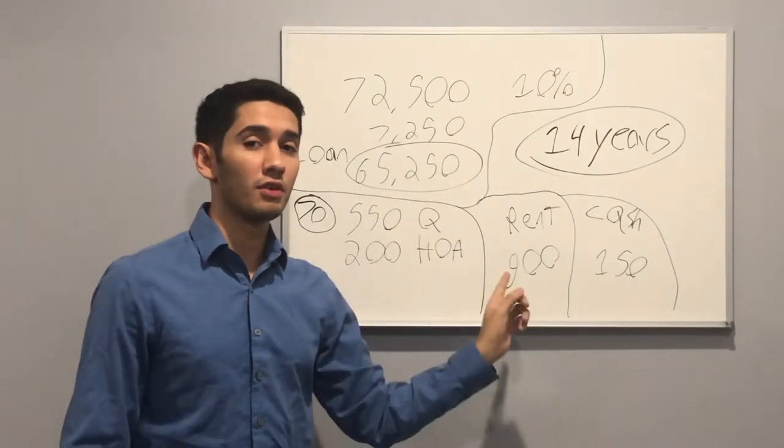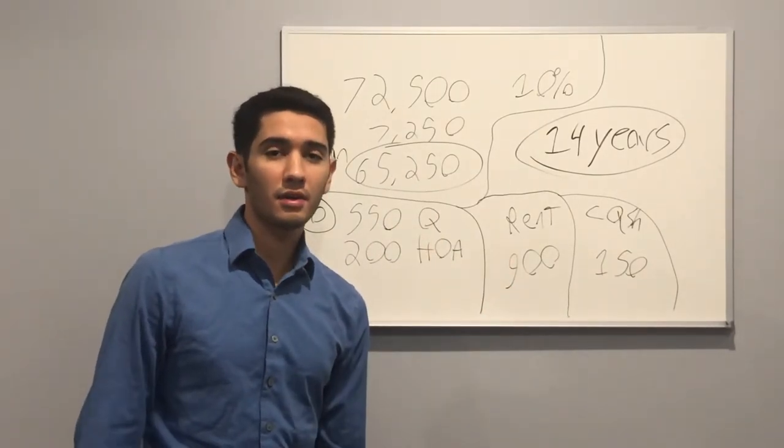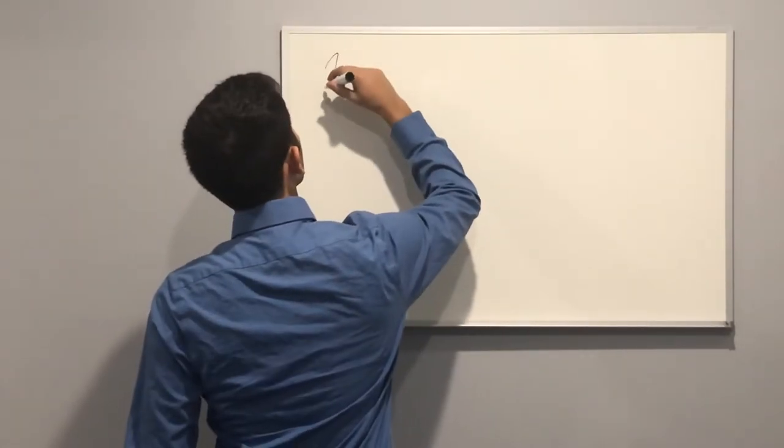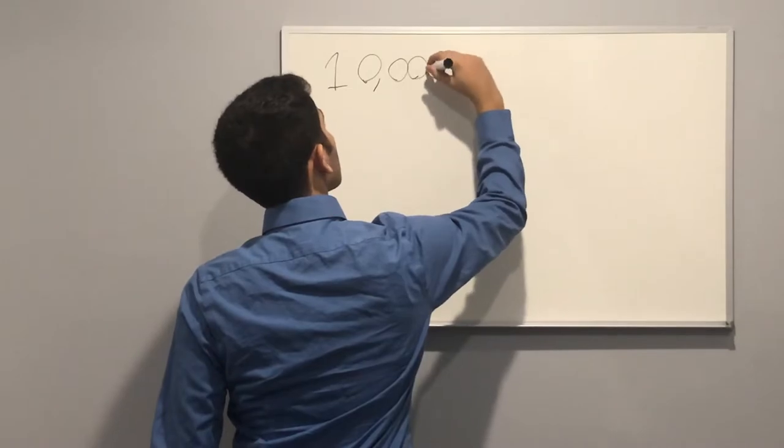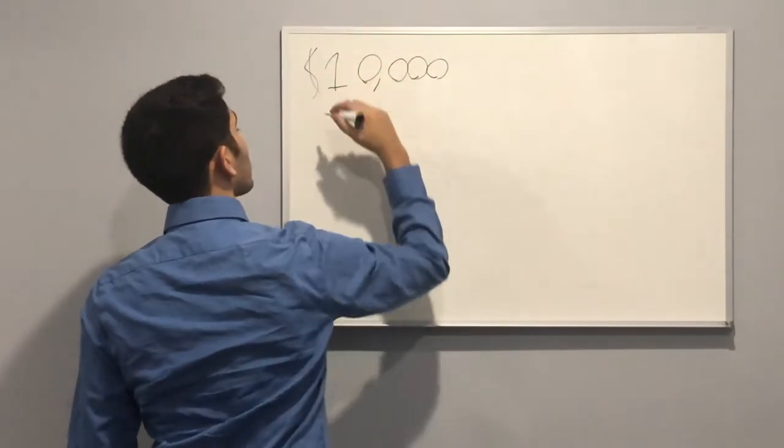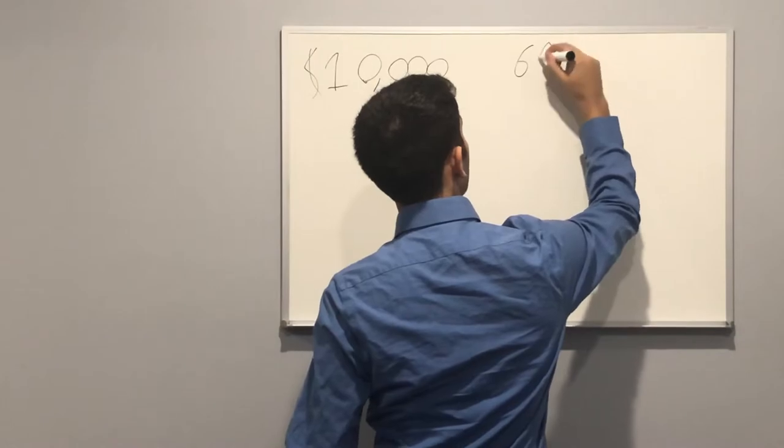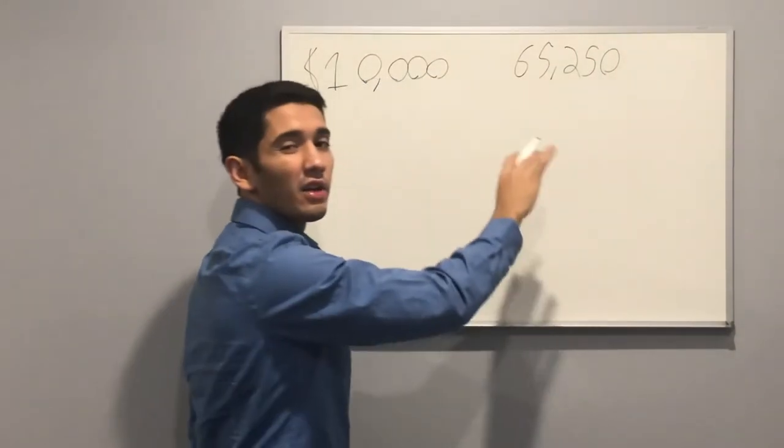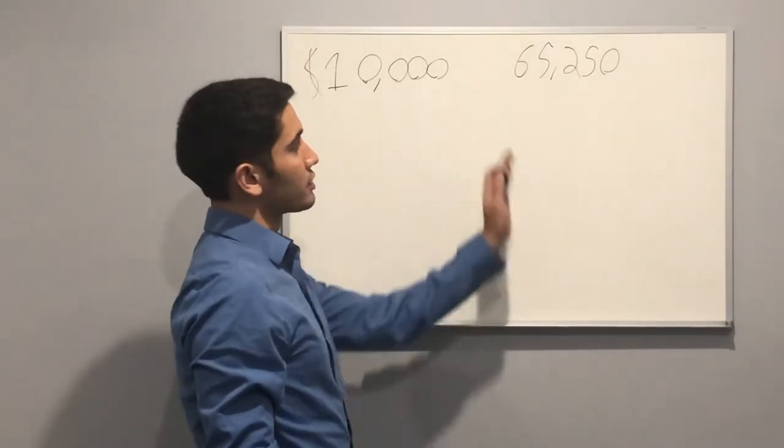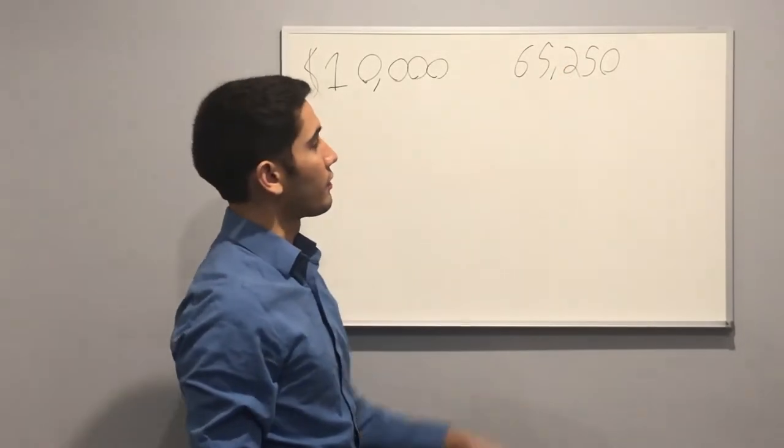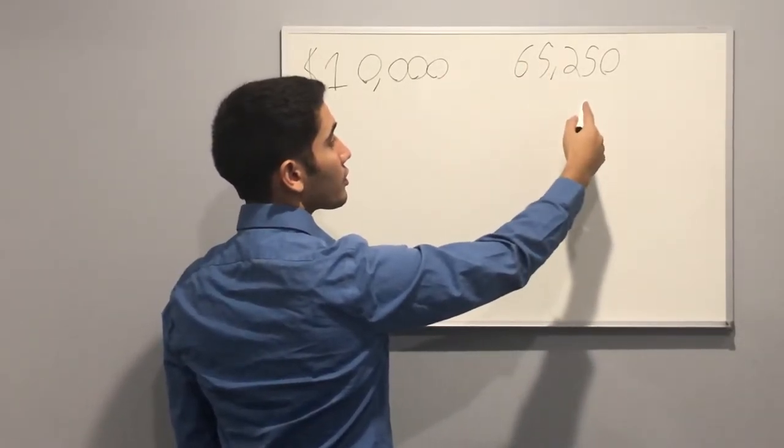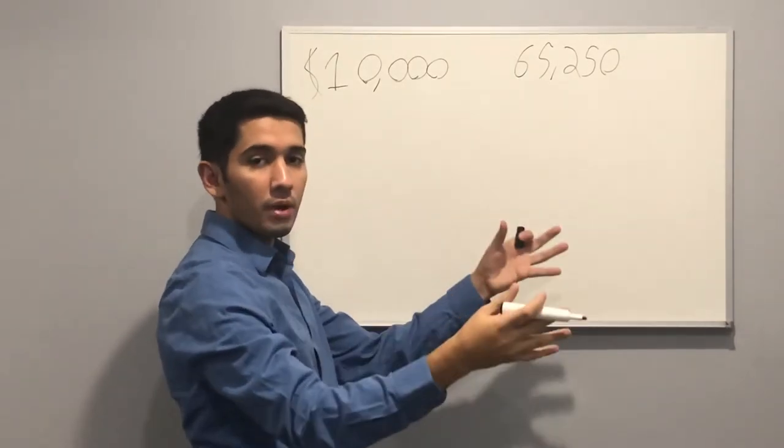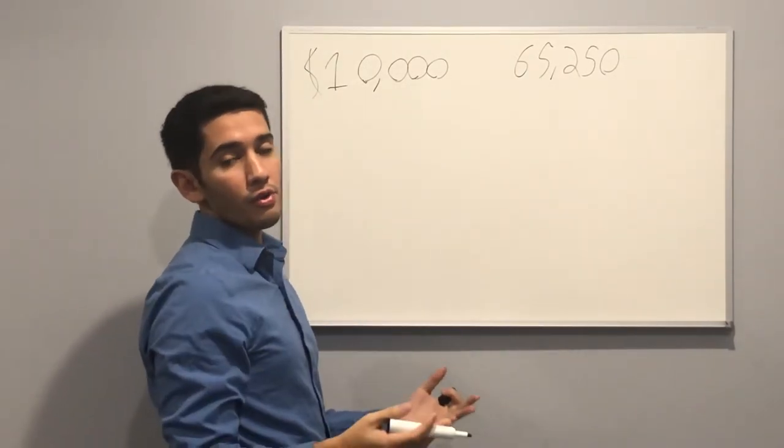And the number doesn't even get this good until I talk about the recasting. Okay, so with the recasting, what I did was I put $10,000 towards my loan which was $65,250. It's gone down a little bit since I've been making payments towards it of $70. But just for this example, let's use this number of $65,000. So I put $10,000 towards it. So now if you remember the old number, it was $550 for all those payments to Quicken Loans and then $200 for the HOA.